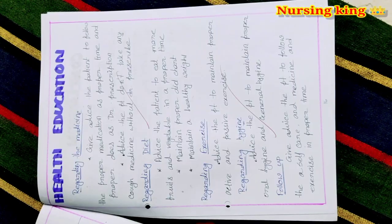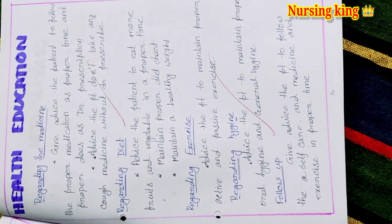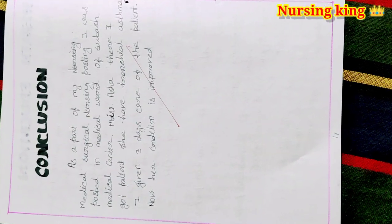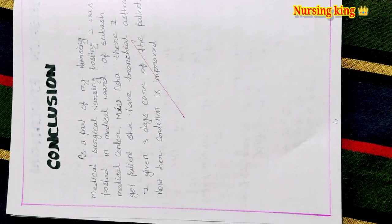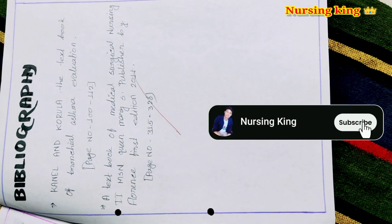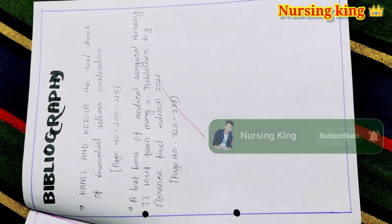So five nursing care plans you have to write. After nursing care plan, you have to write the health education regarding the regular diet, their exercise, follow-up care, everything you have to write. After health education, you have to write the conclusion, and after conclusion, you have to mention the bibliography. So thanks for watching this video.